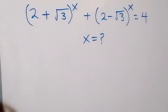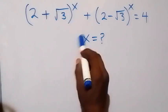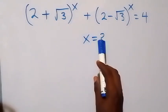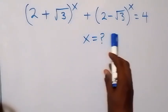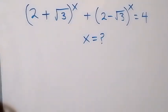Hello, you are welcome. How to solve this nice math problem involving roots. We have (2 + √3) raised to power x, plus (2 - √3) raised to power x, equals 4.